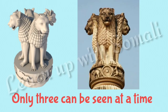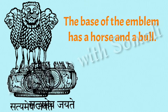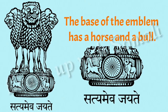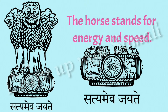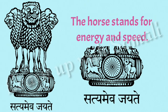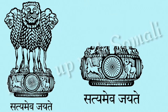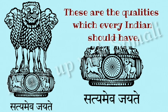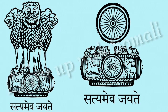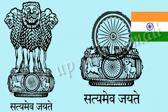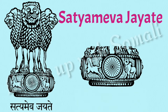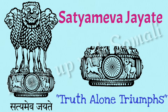Our national emblem has four lions facing the four directions, though only three can be seen at a time. The base of the emblem has a horse and a bull. The horse stands for energy and speed, and the bull stands for hard work — qualities every Indian should have. There is a wheel between the bull and the horse, the same wheel as seen on our national flag. The words 'Satyameva Jayate' written below the wheel mean 'Truth alone triumphs.'